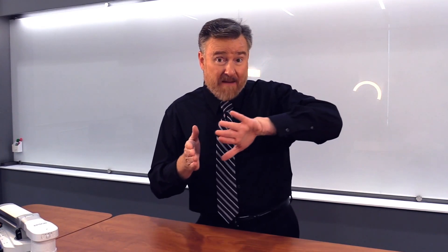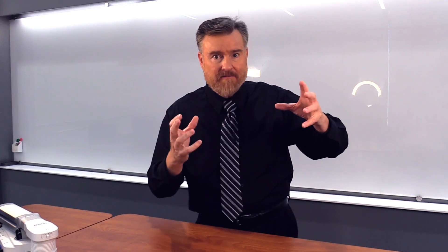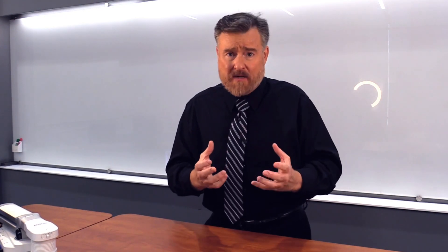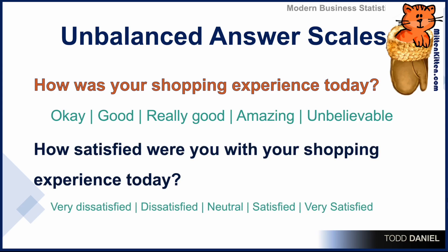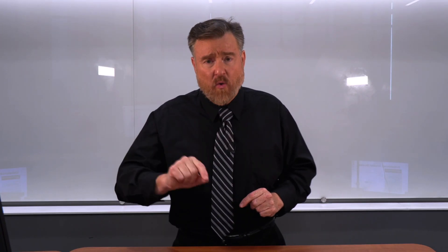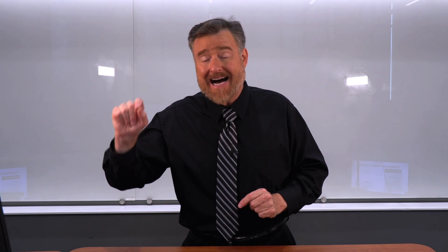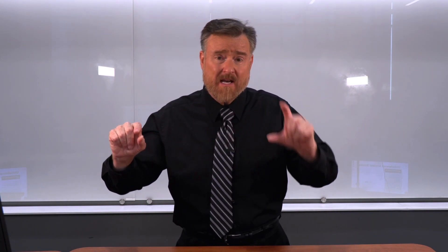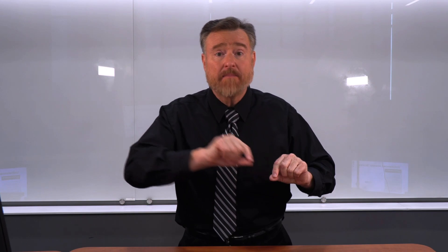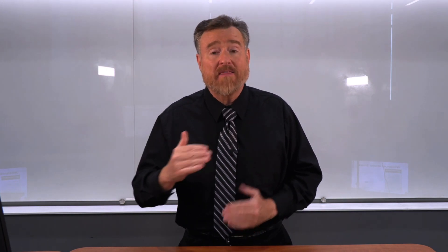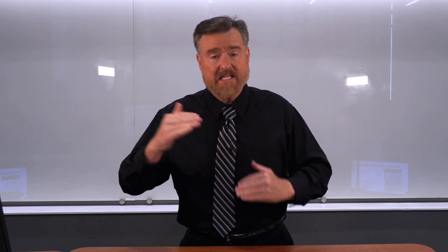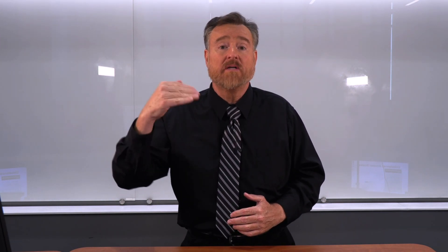Everything above that is just some variation of I really loved it. It's not a balanced answer option. Instead, we should ask, how satisfied were you with your shopping experience today? And the scale runs from very dissatisfied through neutral to very satisfied. When you are creating those scales, always make the score for the very satisfied the high score, and the unsatisfied the low score — so one would be unsatisfied up to five, which is highly satisfied. That way the thing you are measuring is satisfaction, where high scores equal high satisfaction.